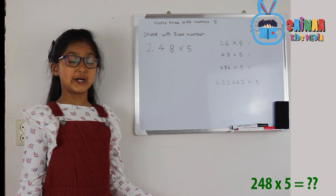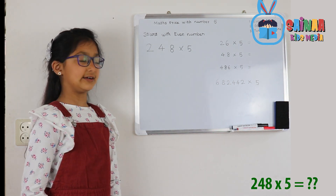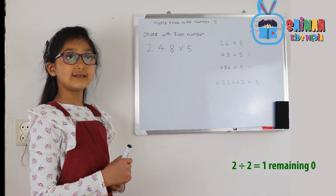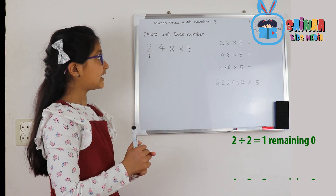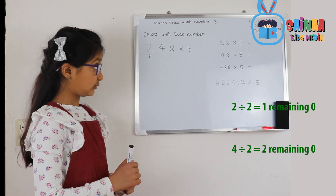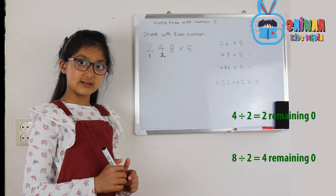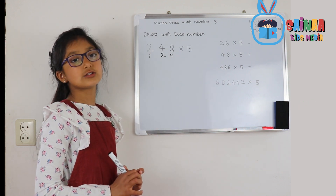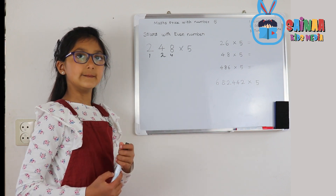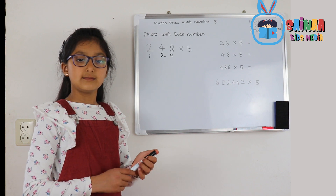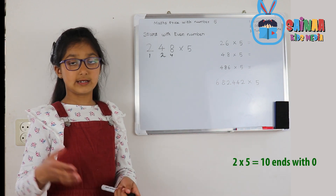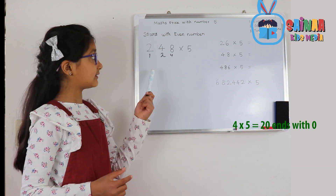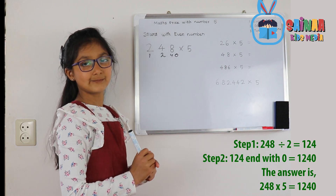248 times 5 — wow, that is very hard. But we have a simple math trick to make it easier. We just have to divide each digit by 2: 2 divided by 2 is 1, 4 divided by 2 is 2, 8 divided by 2 is 4. In the table of 5, every even number times 5 ends with a 0 — like 2 times 5 is 10, 4 times 5 is 20. So we just add a 0 at the end. And that's your answer.